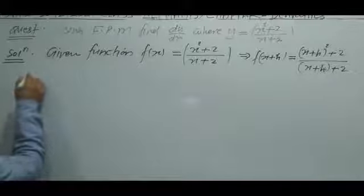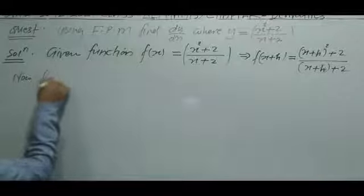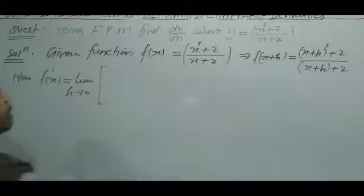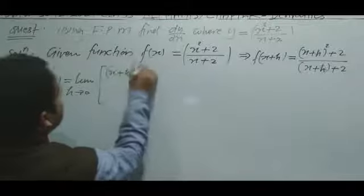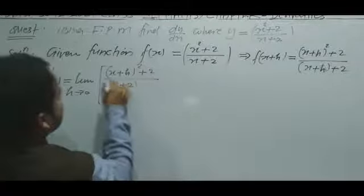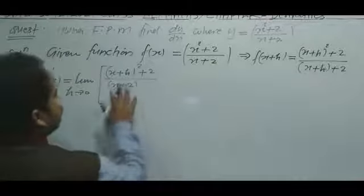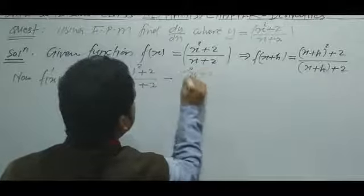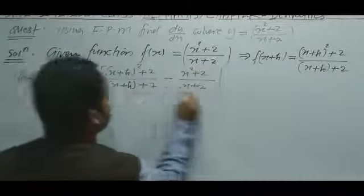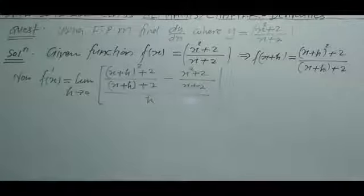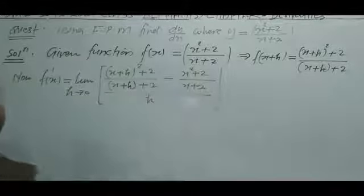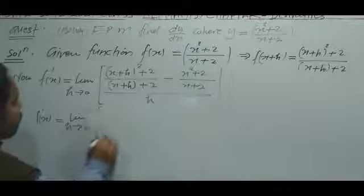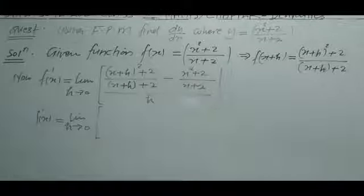So f(x plus h) is (x plus h)² plus 2, all upon (x plus h plus 2), and f(x) is (x² plus 2) upon (x plus 2). Now we write f dash x as: limit h tends to 0 of f(x plus h) minus f(x), whole upon h. We have to take LCM.